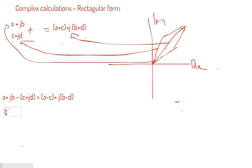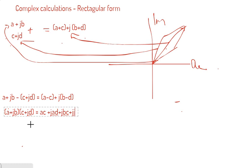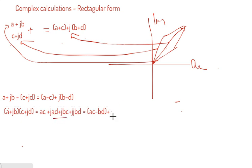Now suppose you are multiplying (a plus j b) into (c plus j d). Expanding using the formula (a plus b) into (c plus d), you get: a·c plus j·a·d plus j·b·c plus j·j·b·d. Since j squared equals minus one, this gives (ac minus bd) plus j into (ad plus bc).